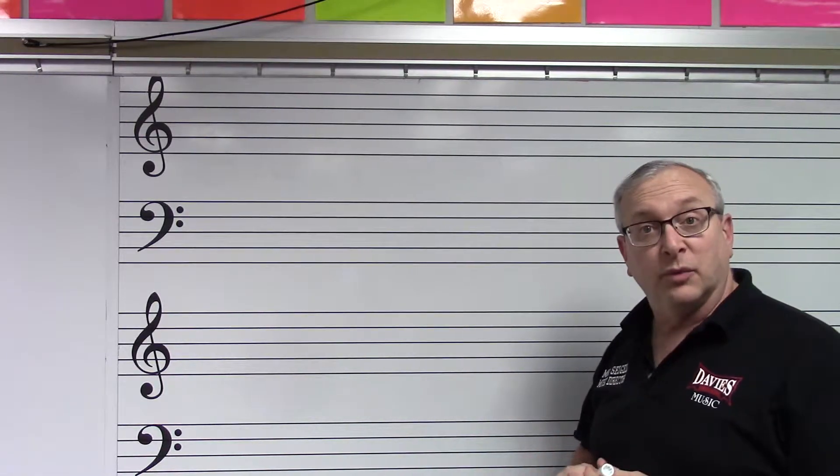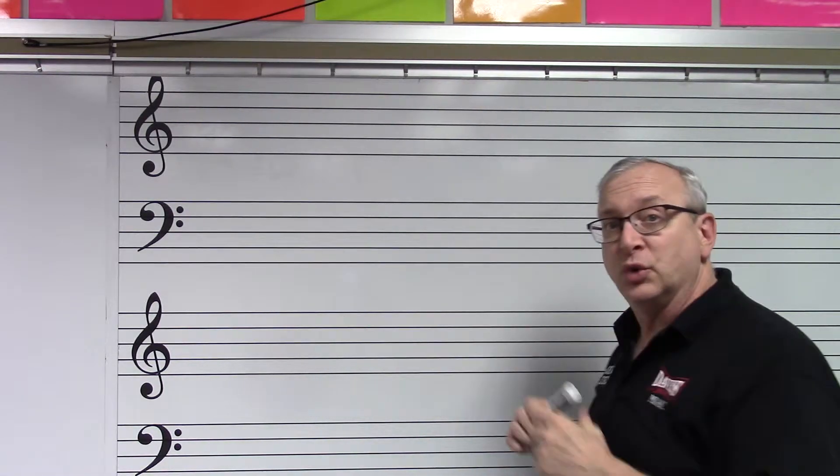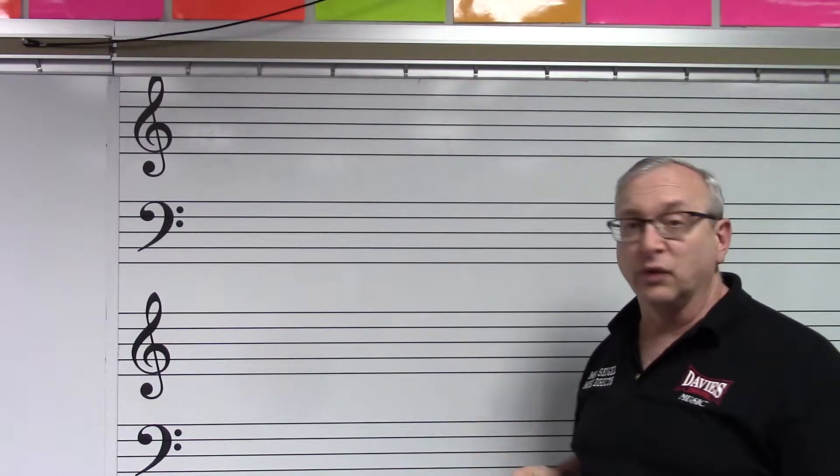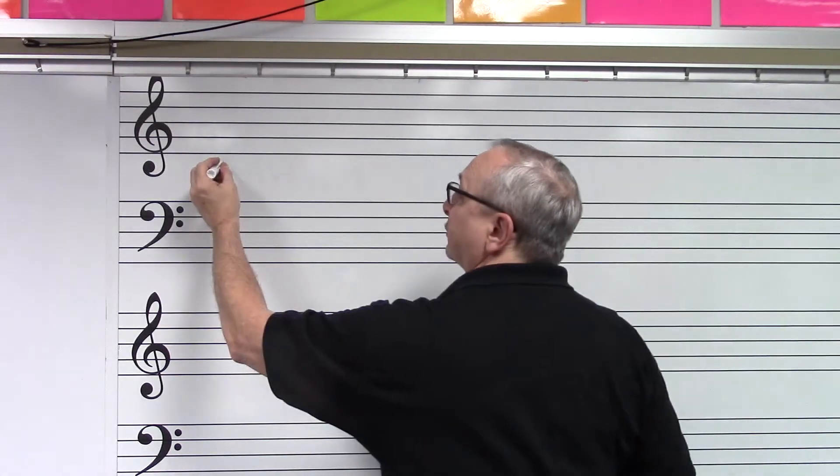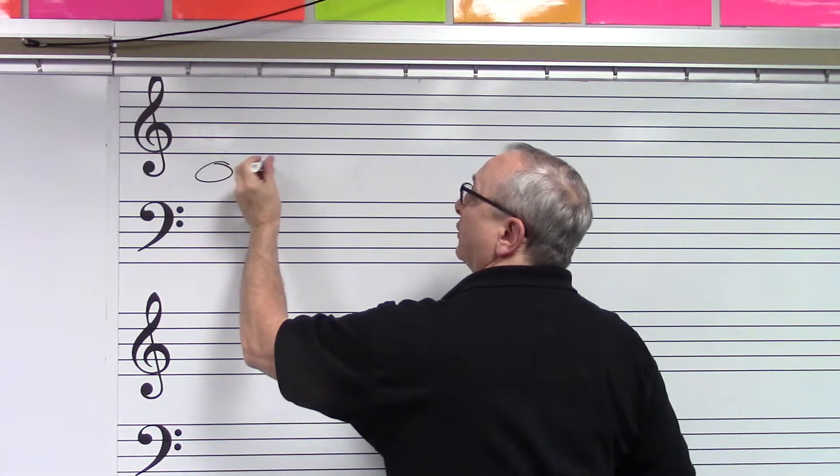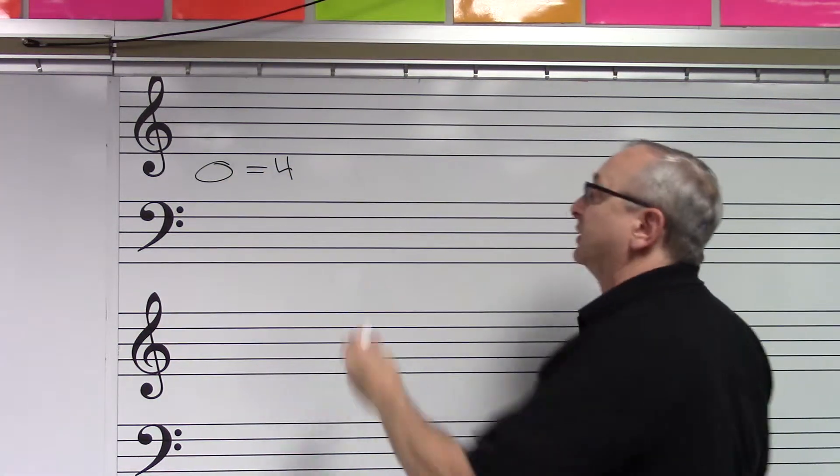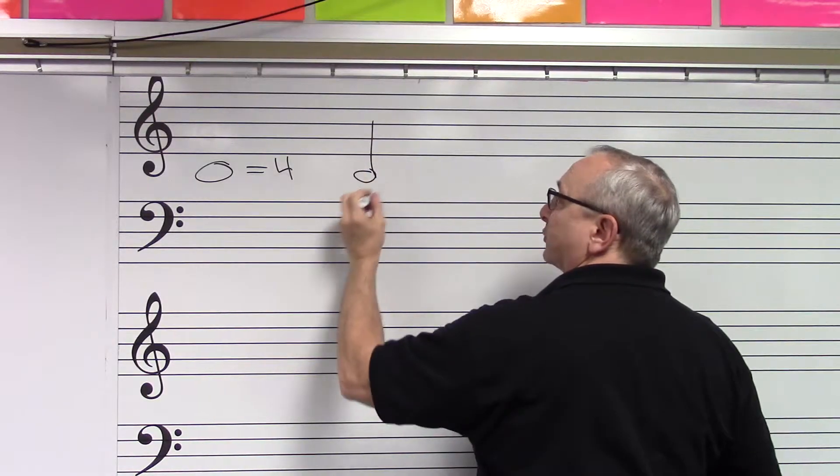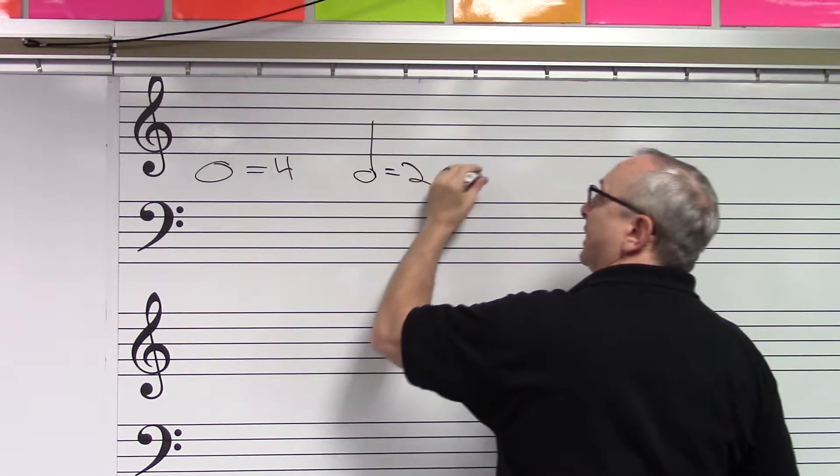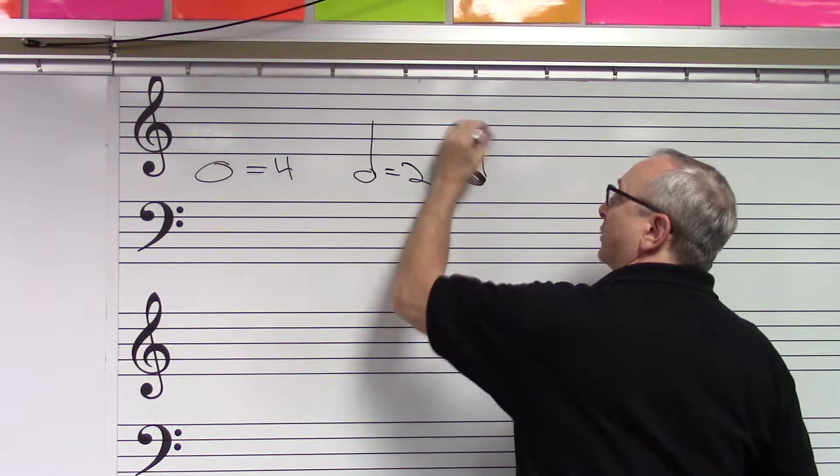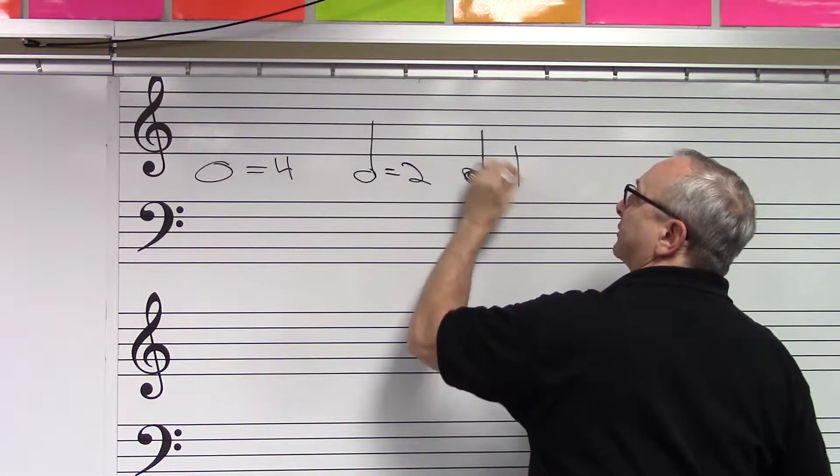We know that certain symbols represent how long you intone or hold the note, whether you're singing it or playing it on an instrument. So we know that a whole note is worth four pulses or four beats, and a half note is worth two, and a quarter note is worth one.